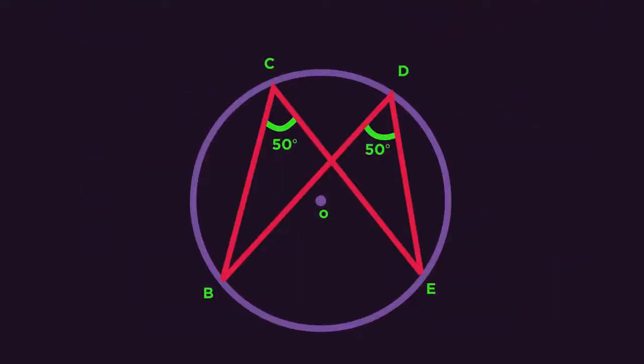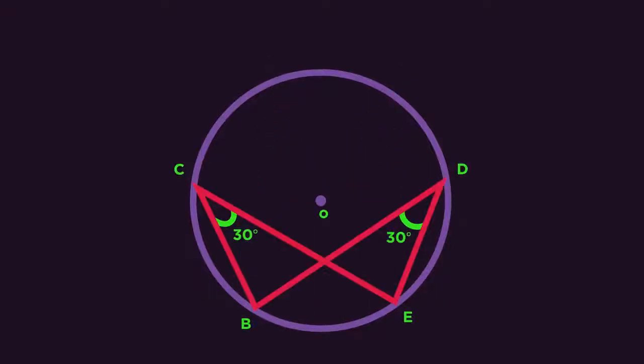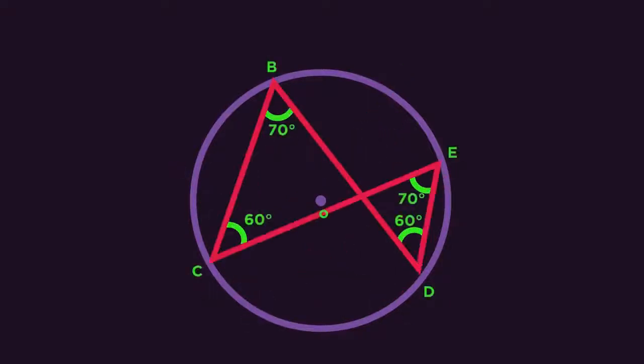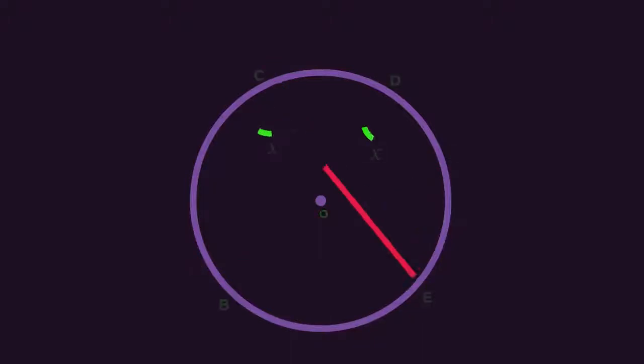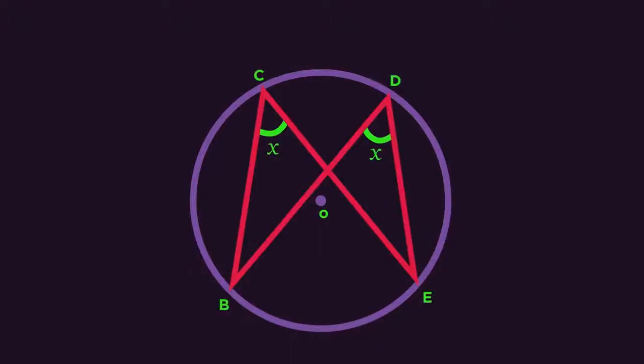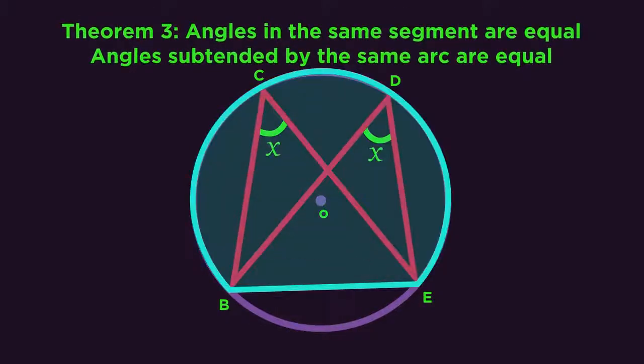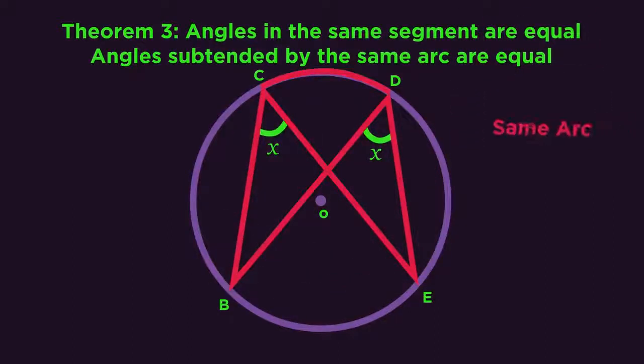So here's the next one. What do you notice about the angles? We describe this one as angles in the same segment are equal. So these angles are in the major segment. But we can also describe this theorem as angles subtended by the same arc are equal.